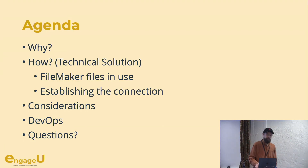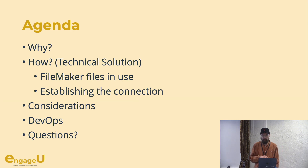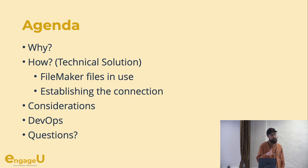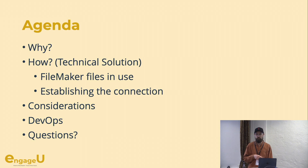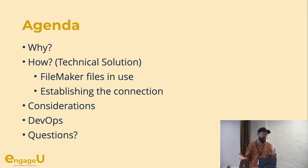First, shortly about why we're doing this and also how — we're going to jump into some technical slides. I'm not going to show any code or any working software; we're just going to talk about this theoretically. We're going to talk about the FileMaker files we use and how we establish the connection to the right file — that's the main thing. Considerations — stuff we learned on the way, what you need to think about, what's not working, and what's working with a tweak or so needed. If we have the time we'll talk shortly about DevOps to deploy from different environments to get all the code out to different data files, and hopefully we have time for some questions at the end.